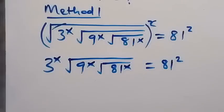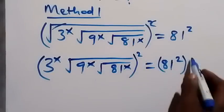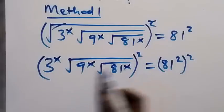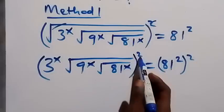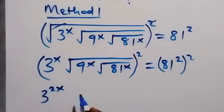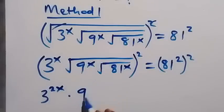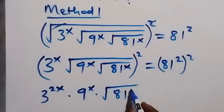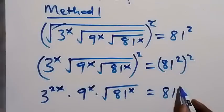In the next step we square both sides again. This square affects 3 raised to power x, giving us 3 raised to power 2x. The square cancels the square root, leaving 9 raised to power x, times square root of 81 raised to power x. On the right side, we multiply the powers repeatedly, giving us 81 raised to power 4.